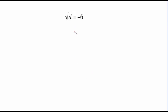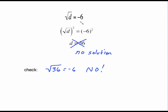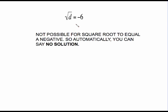For the square root of d equals negative six, to undo the square root let's square both sides. Square root of d squared is just d, and negative six squared is 36. But when we plug 36 in for d to check, the square root of 36 does not equal negative six. The square root of something cannot equal a negative number. So this answer gets thrown out and our answer is no solution. You should be able to recognize from the beginning that if square root equals a negative, you can say no solution right off the bat.